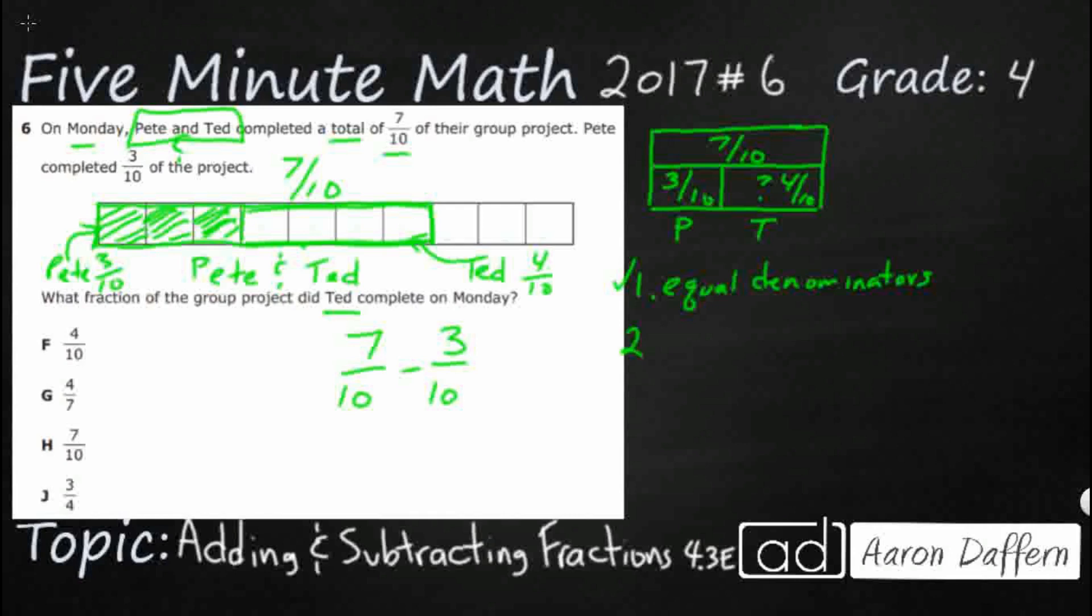But here's the tricky part right here. You don't touch the denominators. Once you have them equal, you don't touch them, you don't change them. You don't add them, you don't subtract them. You subtract straight across. Seven minus three. That makes four. And then ten minus ten, you don't touch it. It just remains ten. Because I've got four tenths left and that makes sense.